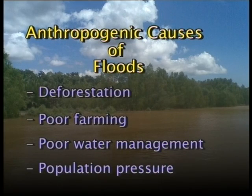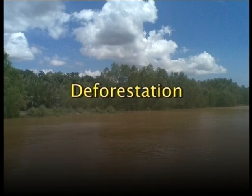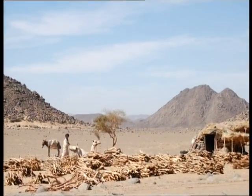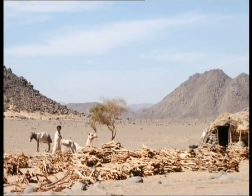Anthropogenic causes of flood include deforestation, poor farming, poor water management, and population pressure. Large areas of forest near rivers have been cleared because of human demand. With no trees to soak up water or hold the soil together, large amounts of soil and water are washed off by rains into the river, increasing the water volume and causing floods.